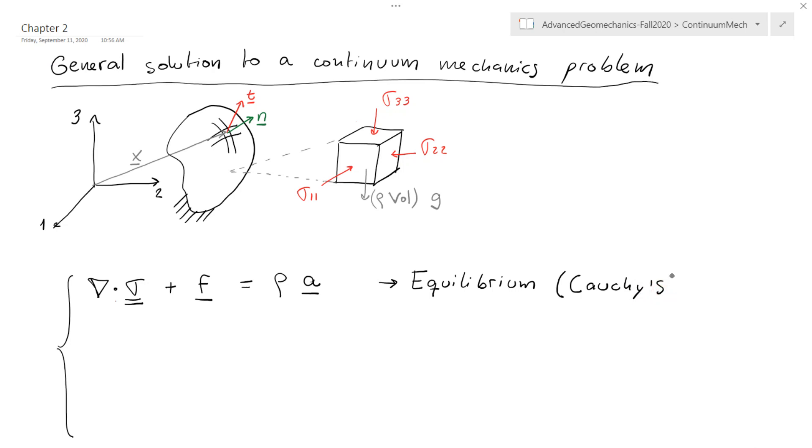This equation is based on linear momentum and angular momentum equilibrium and tells us that the divergence of the stress tensor has to be balanced by body forces and by the acceleration of the solid, if any. This is basically F equals ma, because here density is mass density; if I multiply mass density times volume I get mass.